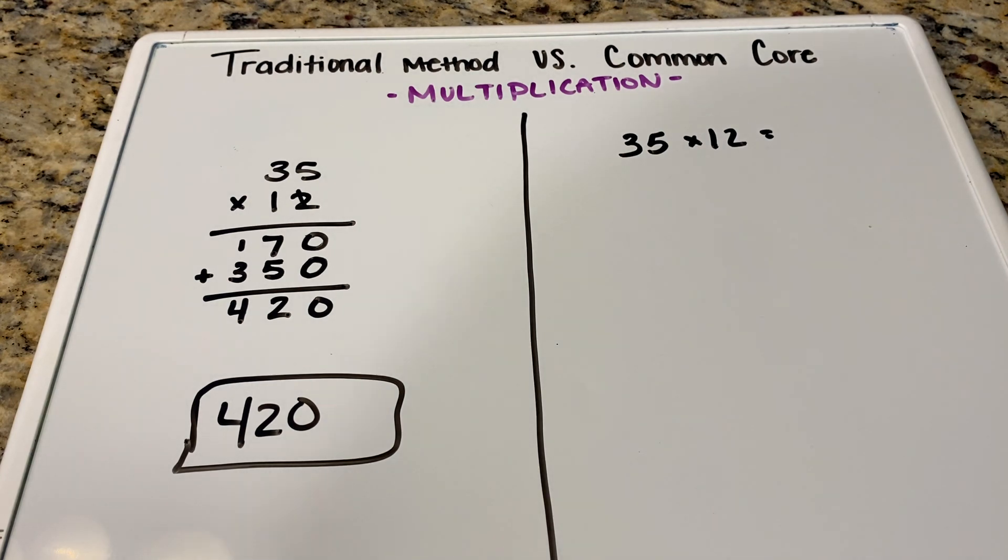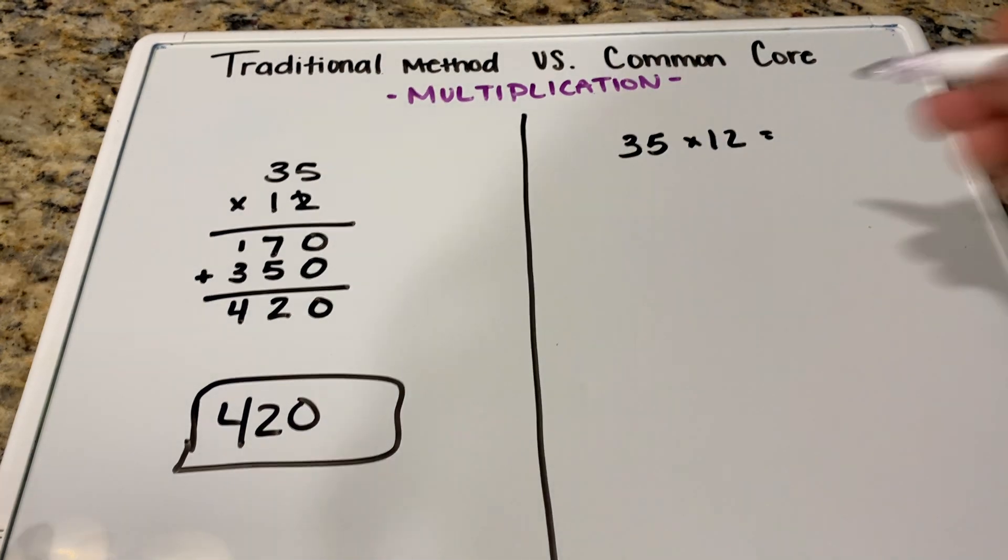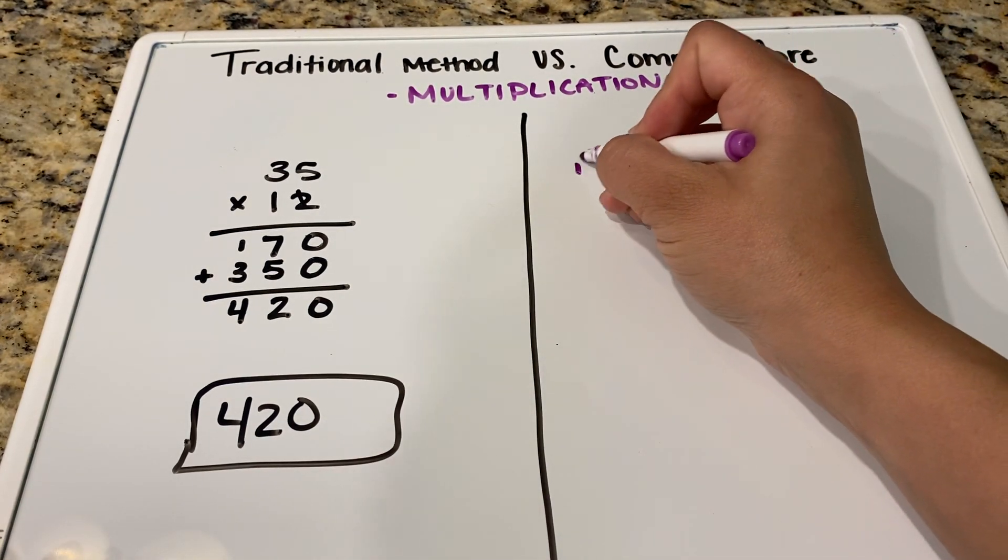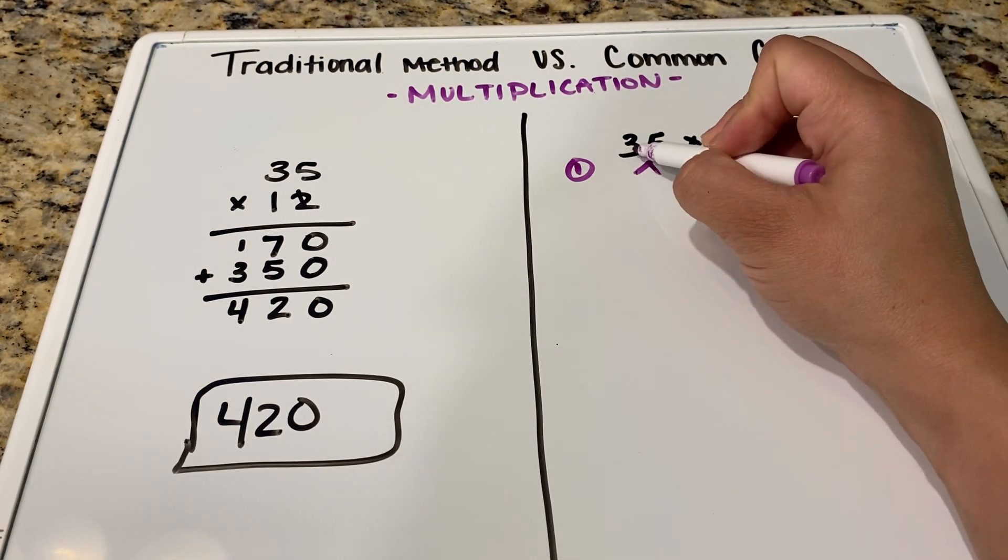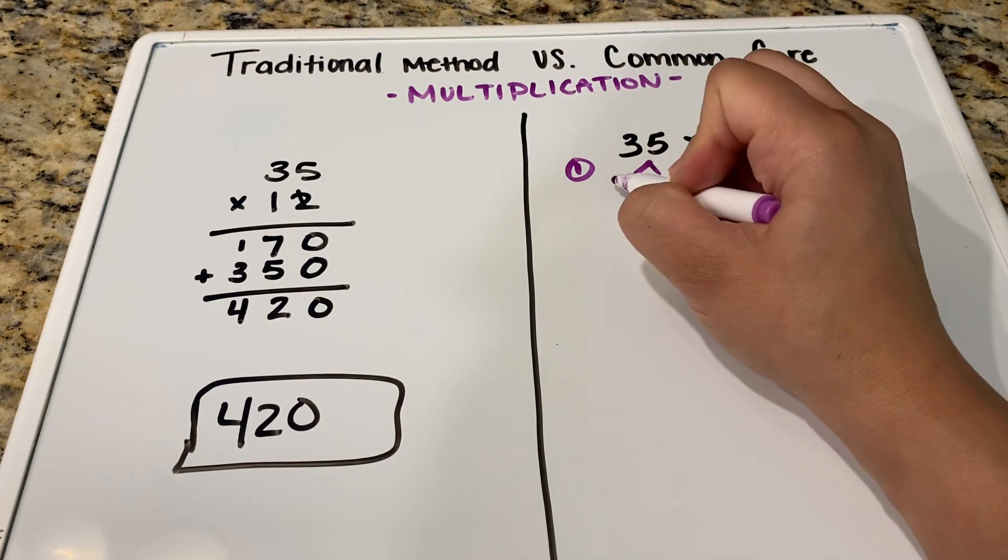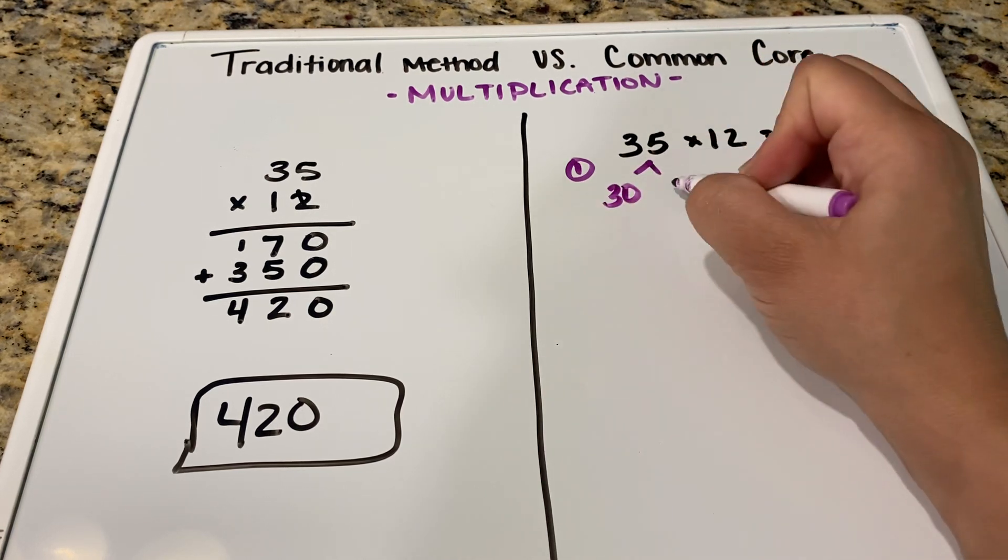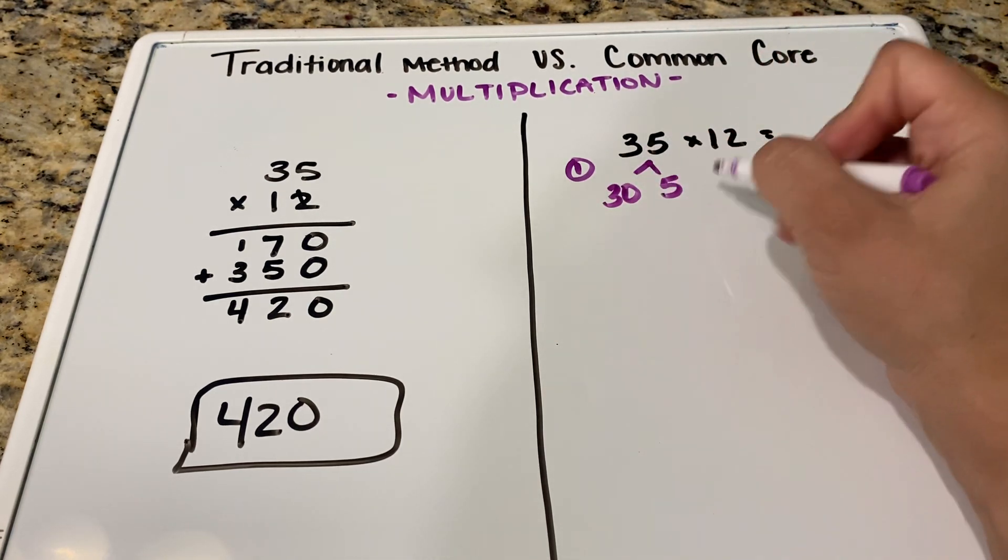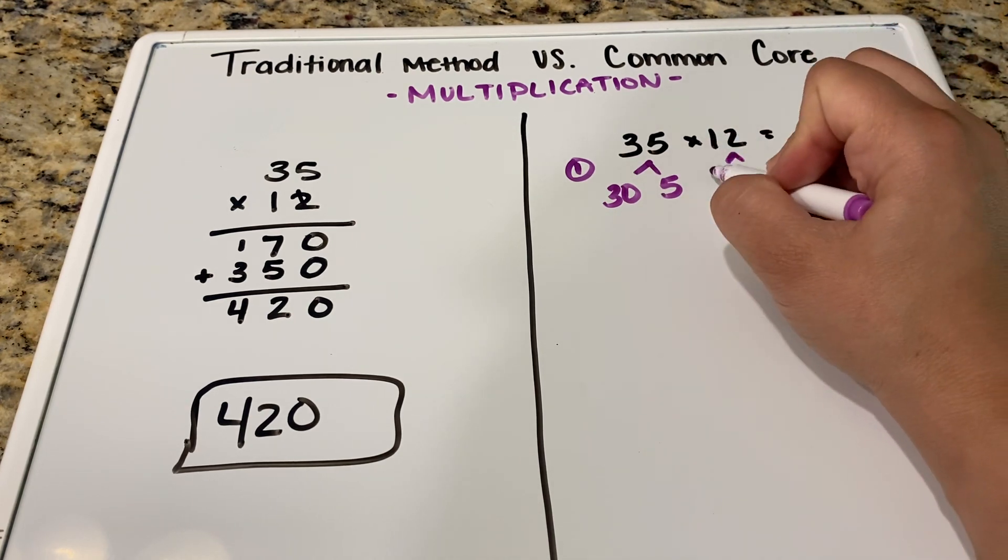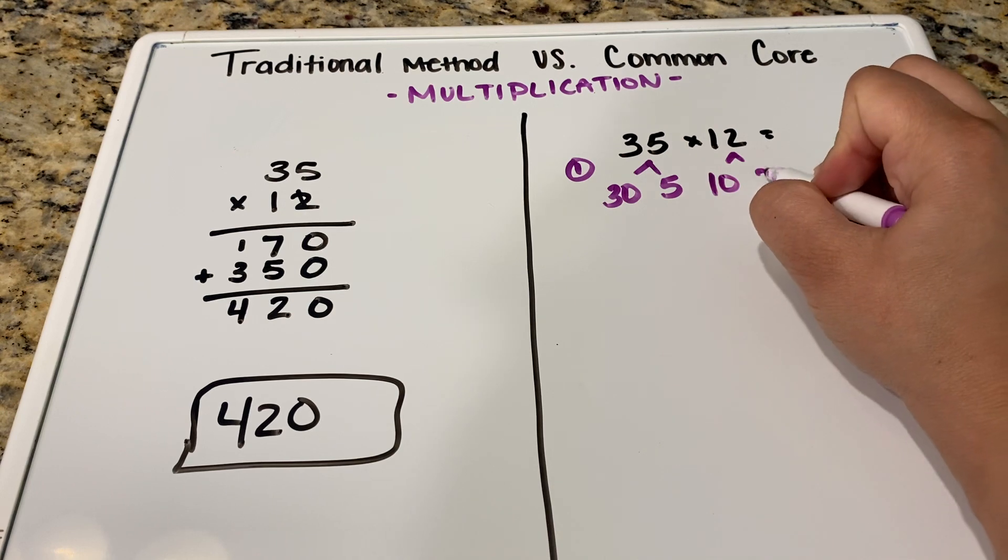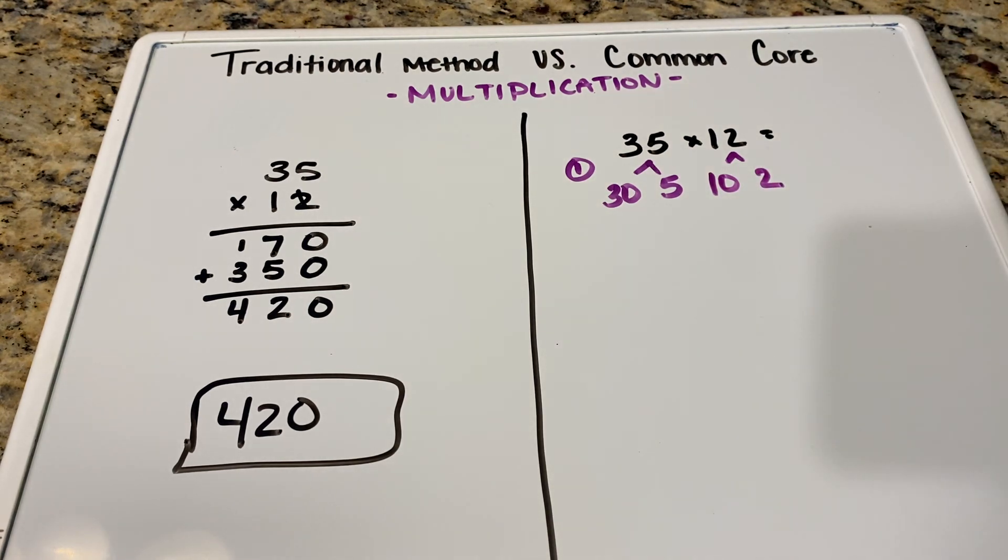So step one, what we would like to do is go ahead and break down 35 times 12. So we're going to break down 35 with our ones and our tens. So the 3 is in our tens, which is 30. And our 5 is in our ones. So we're going to break it down. We're going to do the same thing with 12. We're going to break down 12. So 1 is in our tens place. 2 is in our ones place. And that is the end of step one. So we're simplifying it from there.